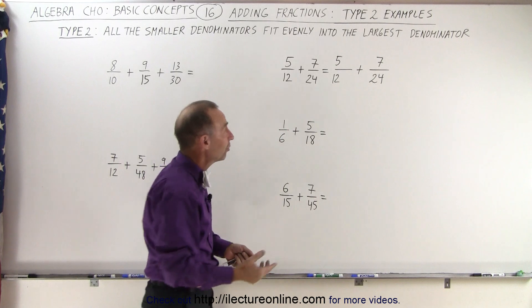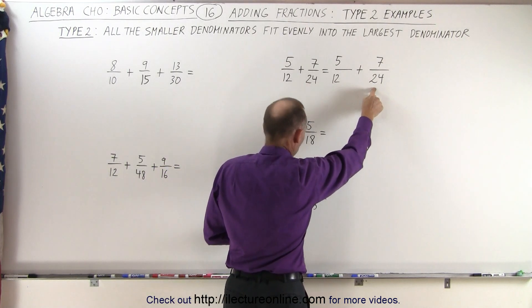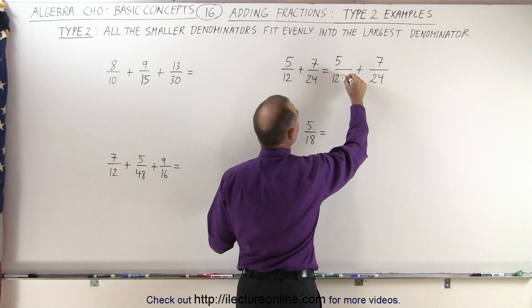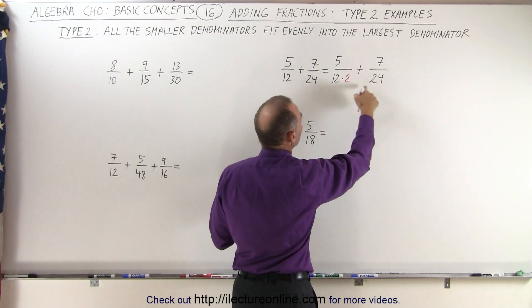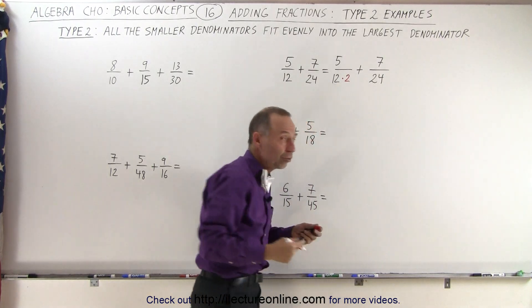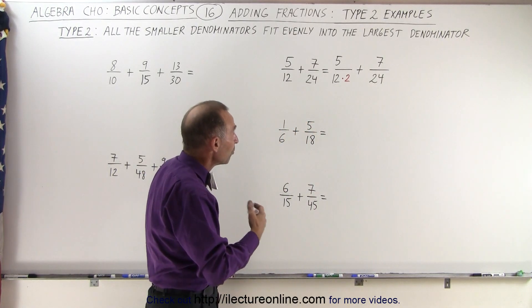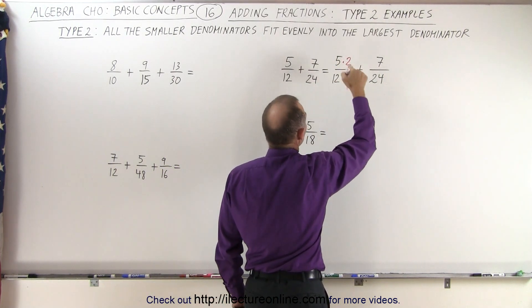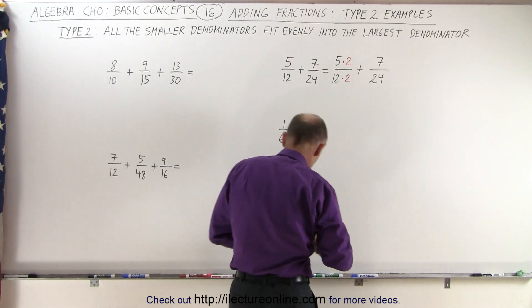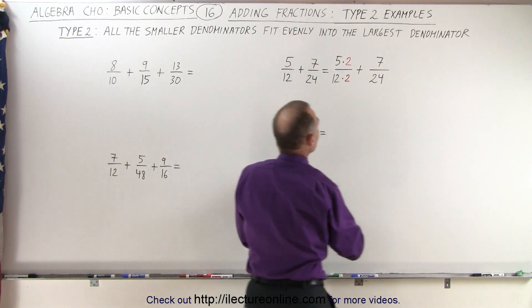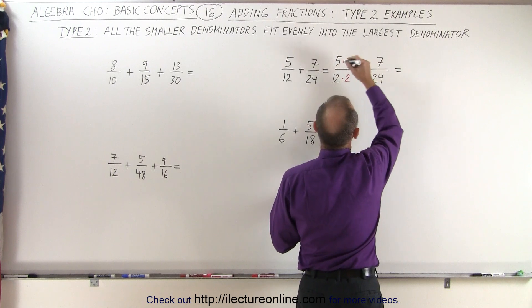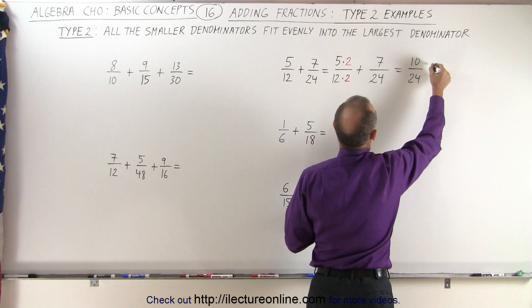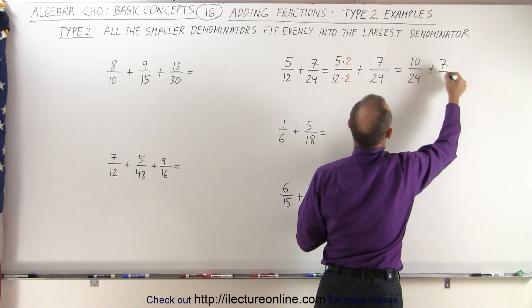We ask ourselves: what must I do to 12 to make it into 24? The answer is I need to multiply that denominator by 2, because 12 times 2 is 24. But if I'm going to multiply the denominator by 2, I must also multiply the numerator by 2, otherwise the fraction has changed. Now I can write this as 5 times 2, which is 10, over 2 times 12, which is 24. And then we still have 7 over 24.